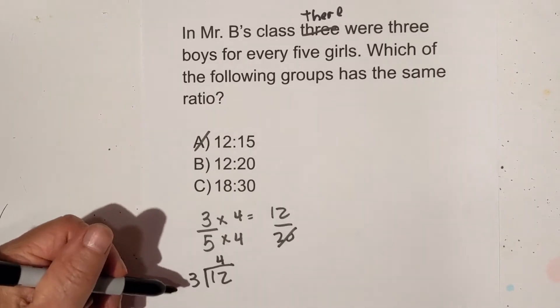So now let's look at number B. Okay I'm going to do the exact same thing. I'm going to take 12 divided by 3 and that is 4. So now I have 3 times 4 and 5 times 4 that equals 12:20. So yes that is a check.